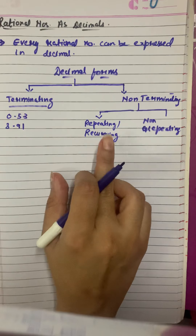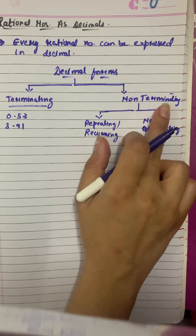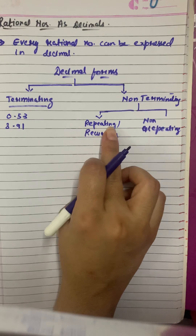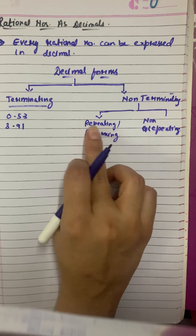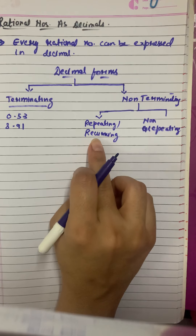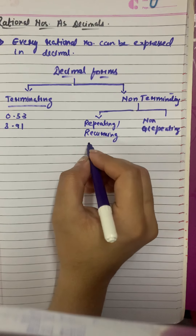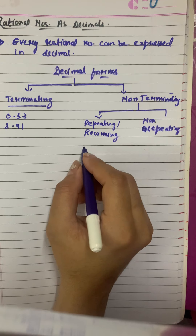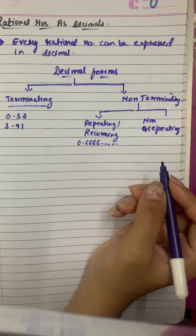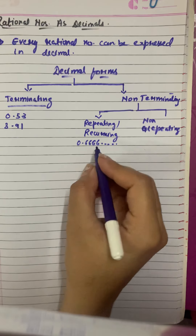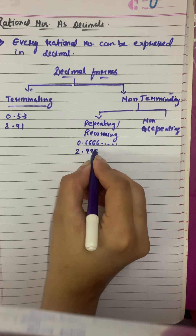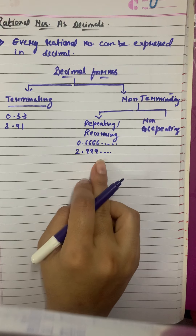Now coming to the next category: non-terminating. We are first going to talk about repeating or recurring decimals. As the name suggests, repeating means it keeps on repeating, coming again and again. An example of a recurring or repeating decimal would be 0.66666 — you can see it's going on and on. Another example could be 2.99999, again going on and on.